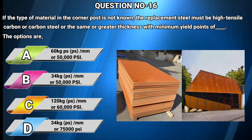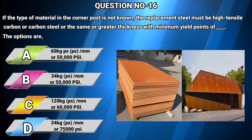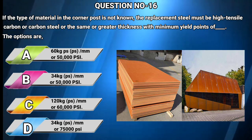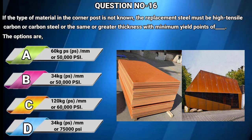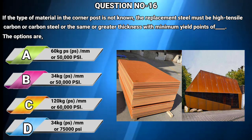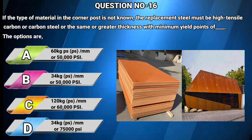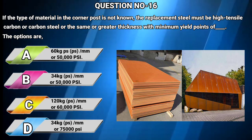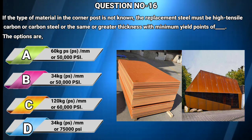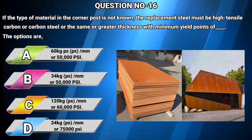Question number 16: If the type of material in the corner post is not known, the replacement steel must be high tensile carbon or carbon steel of the same or greater thickness, with minimum yield points of — Options: A) 60 kg/mm² or 50,000 psi, B) 34 kg/mm² or 50,000 psi, C) 120 kg/mm² or 60,000 psi, D) 34 kg/mm² or 75,000 psi. The answer is B: 34 kg per square millimeter or 50,000 pounds per square inch.